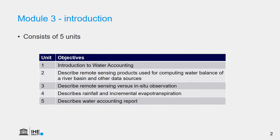A brief introduction of this module. This module consists of five units. The first unit is Introduction to Water Accounting, which describes the purpose, the need and importance of water accounting and its relevance for integrated water resources management. Unit 2 is devoted to describing remote sensing products used for computing water balance of a river basin and other data sets used in water accounting.